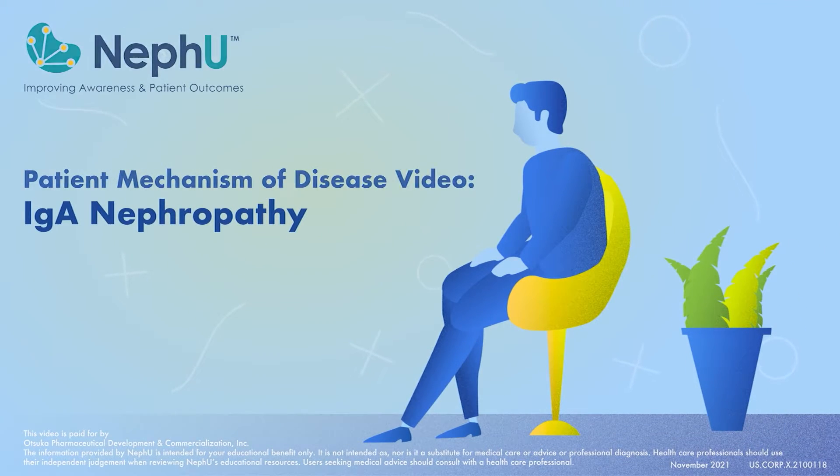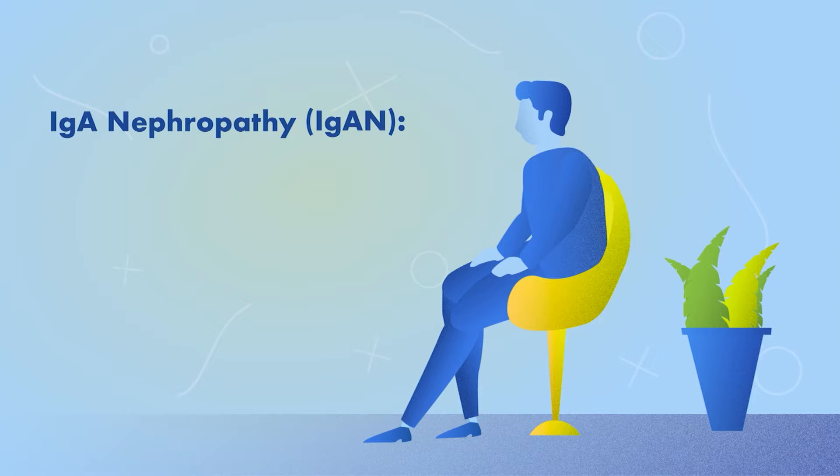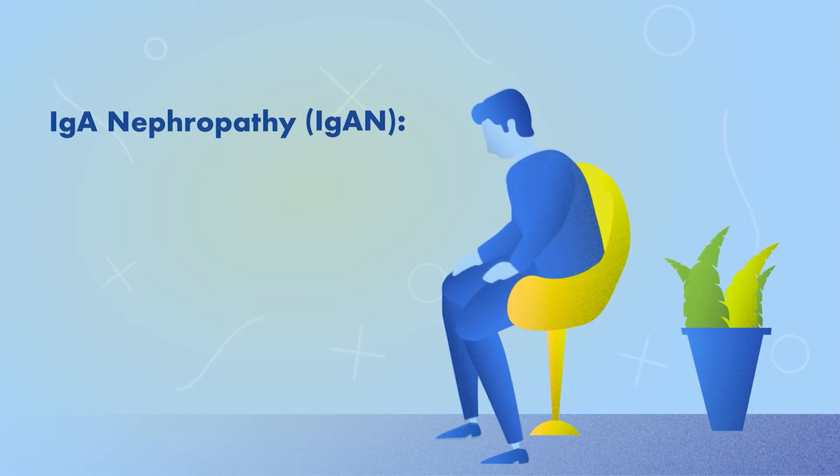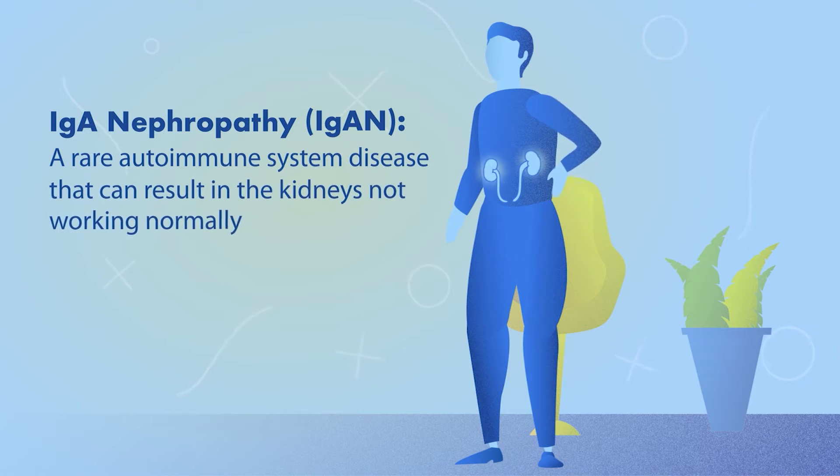IgA nephropathy, also called IgAN, is a rare autoimmune system disease that can result in the kidneys not working normally.